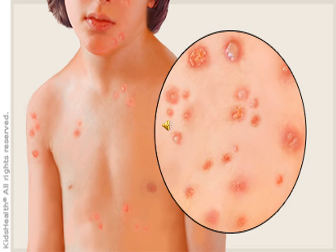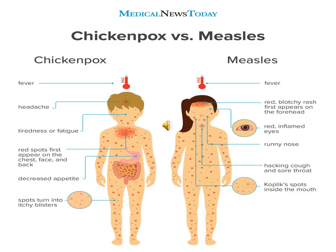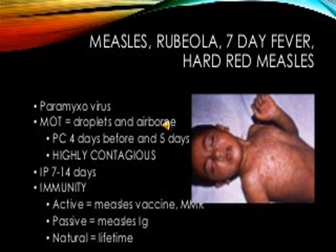This figure shows the comparison between signs and symptoms of chickenpox and measles. Measles, also known as rubeola or seven-day fever, is caused by an RNA paramyxovirus. Its incubation period is 7 to 14 days. Active immunity is achieved through the measles vaccine, known as MMR (measles, mumps, rubella). Passive immunity can be achieved by measles immunoglobulin. The MMR vaccine is given at the age of 6 to 9 months.